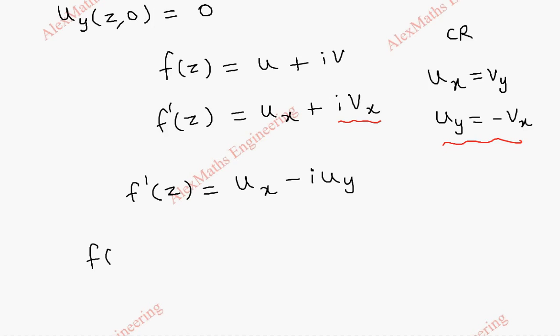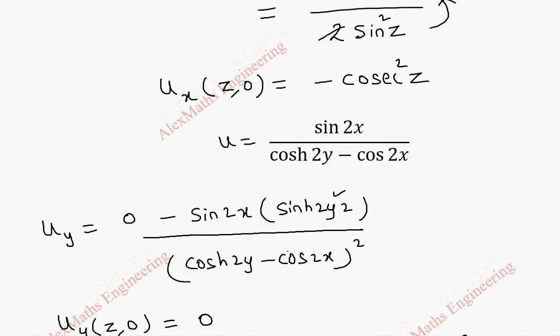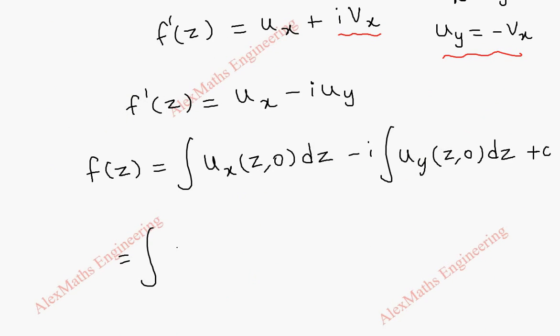Now from Milne-Thomson equation, f of z can be taken as integral u_x of z comma 0 dz minus i integral u_y of z comma 0 dz plus c. So we are going to substitute u_x of z comma 0 which is minus cosecant square z. So minus cosecant square z dz. And the second part is totally 0.